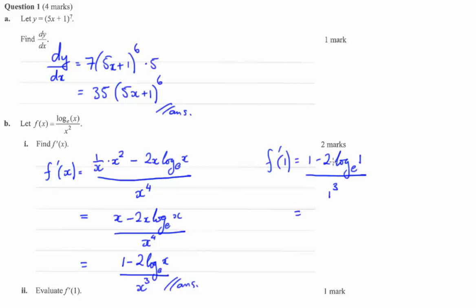The natural log of 1, well, the natural log of 1 has to be 0. e to the power of 0 gives you the 1. So that just cancels. And we get 1 on 1 cubed, which equals 1.